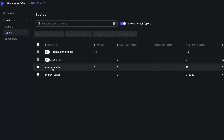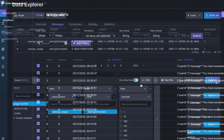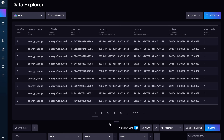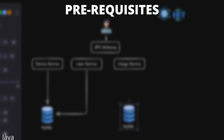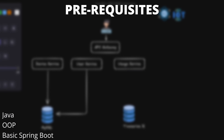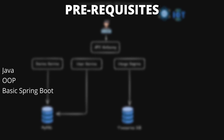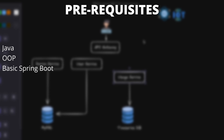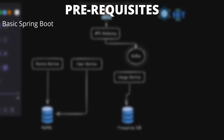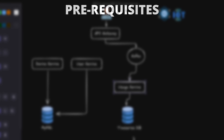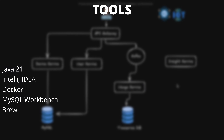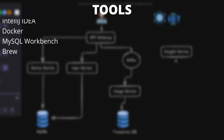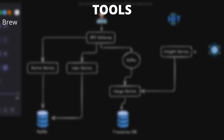If you haven't already, please also check out my previous microservices project. There are some simple prerequisites to follow this course: you need to know a bit of Java, object-oriented programming concepts, and a little bit of Spring Boot. On screen you can see a list of tools that you need to have pre-installed on your machine if you want to follow along.